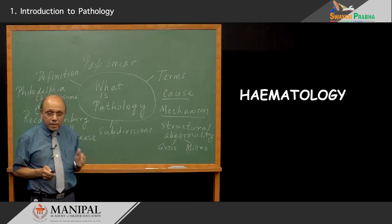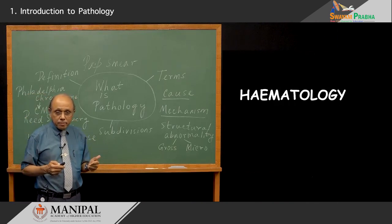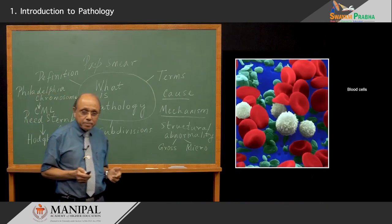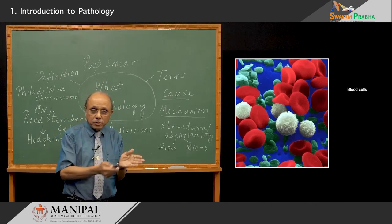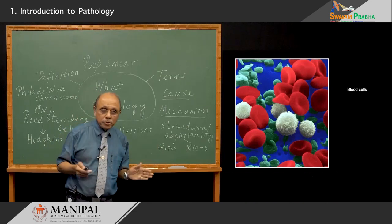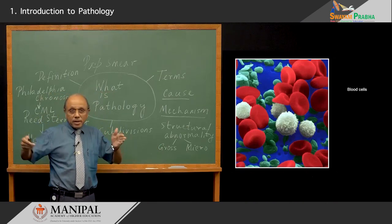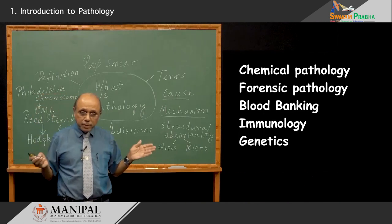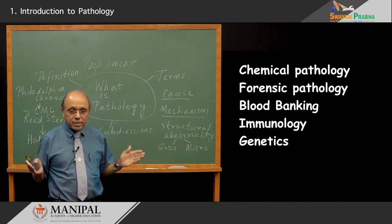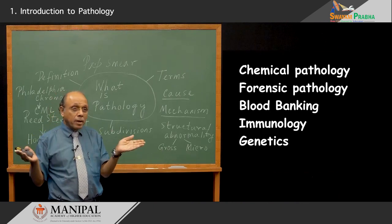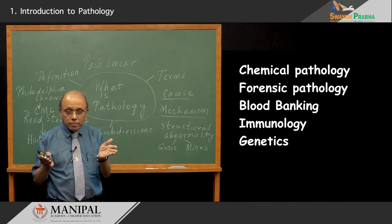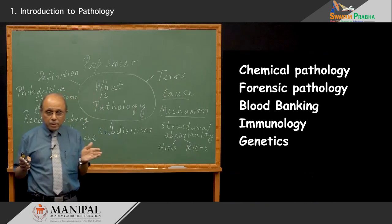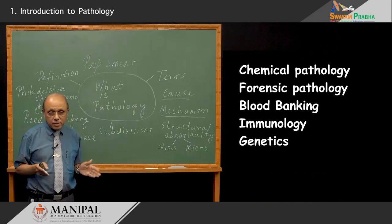The third branch of pathology deals with blood diseases — leukemias, anemias — all part of hematology. Hematology has now become an independent branch, having meandered away from pathology. There are also other branches that once used to be under pathology but have now all become independent: chemical pathology — which is actually diagnostic biochemistry — forensic pathology, medical jurisprudence, blood banking, immunology, and genetics.